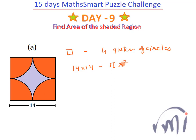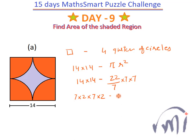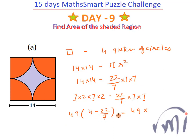The area of the circle is pi r squared. So this can be written as 14 × 14 minus (22/7) × 7 × 7. I write 14 as 7 × 2 in both terms to take 7 × 7 = 49 common from both. This gives 49 × (4 − 22/7) = 49 × (28 − 22)/7 = 49 × 6/7 = 42. So the area of the shaded region is 42 square units.